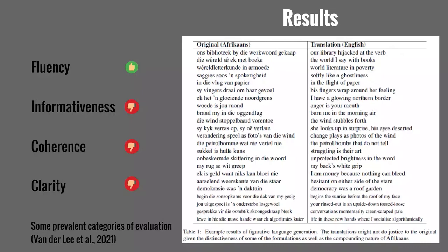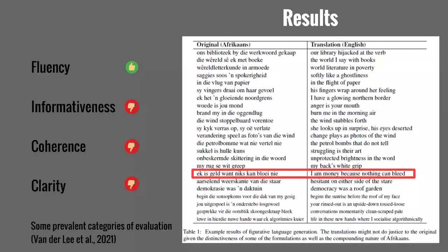Fluency: overall, the results do lean towards the fluent side. Can a creative metaphor really be informative? Looking at the example 'I am money because nothing can bleed' — it communicates meaning but is not informative. And what about coherence? Not necessarily; looking at the same example, internal consistency is lacking. And clarity? That's also debatable. It really depends on how you define these categories. If the results were evaluated according to these standard evaluation categories for generated text, there is a chance that the results wouldn't do too well.